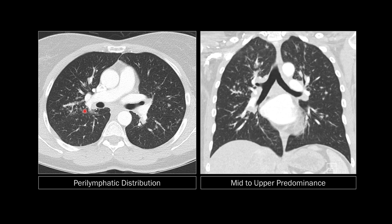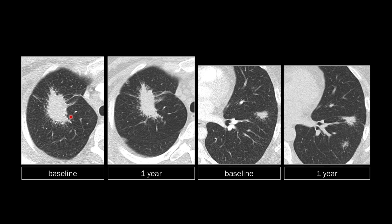I have another video about the distribution of nodules and how to differentiate centrilobular, random, and perilymphatic if you want to learn more. In some cases of sarcoid, the appearance is not multiple tiny nodules but larger mass-like areas of consolidation, which actually represent a huge conglomeration of multiple tiny nodules. At the periphery of this mass you'll see multiple tiny nodules, and one year later you can see it even better. Some people call this the galaxy sign.